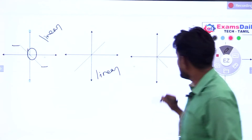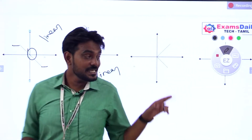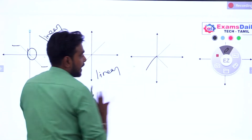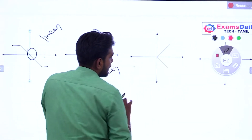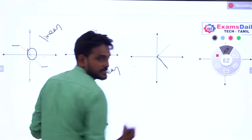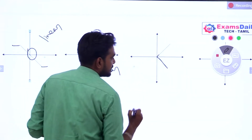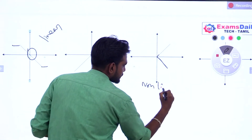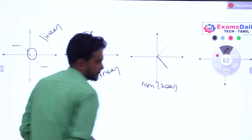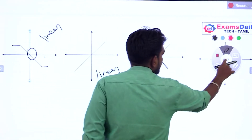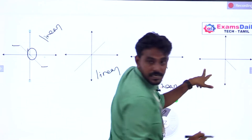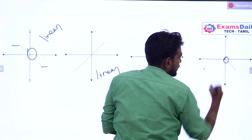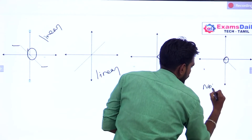Then let's look at this graph. It touches the origin. If it touches the origin, it should be a non-linear element. This element is also non-linear.